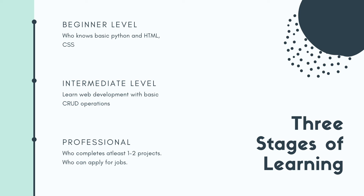This course has three levels. First, we will learn Python basics along with HTML and CSS. Second, at the intermediate level, we will learn CRUD operations — create, update, delete, and read, where read means display. Third, you will complete two projects, where you can apply everything you have learned.